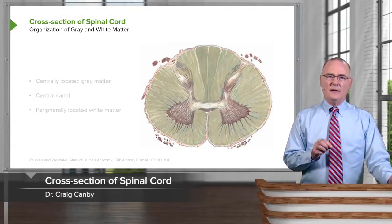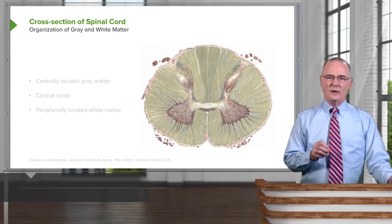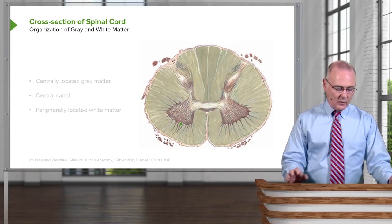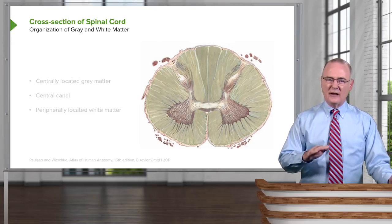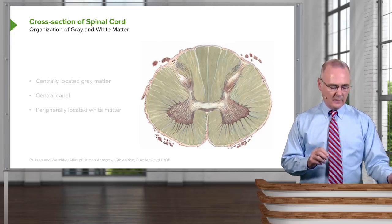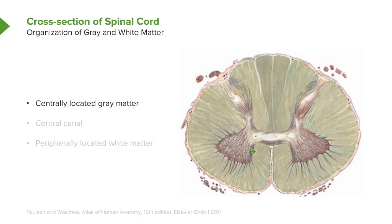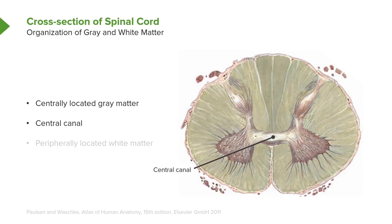I want you to understand the organization of the spinal cord. Here we have a cross-section of the spinal cord. There are three features in this cross-section or axial section that I want you to understand. First, the spinal cord is made up of centrally located gray matter. It communicates to the opposite side, giving it a butterfly appearance. In the central aspect, there is a central canal, and cerebrospinal fluid is found within the central canal.